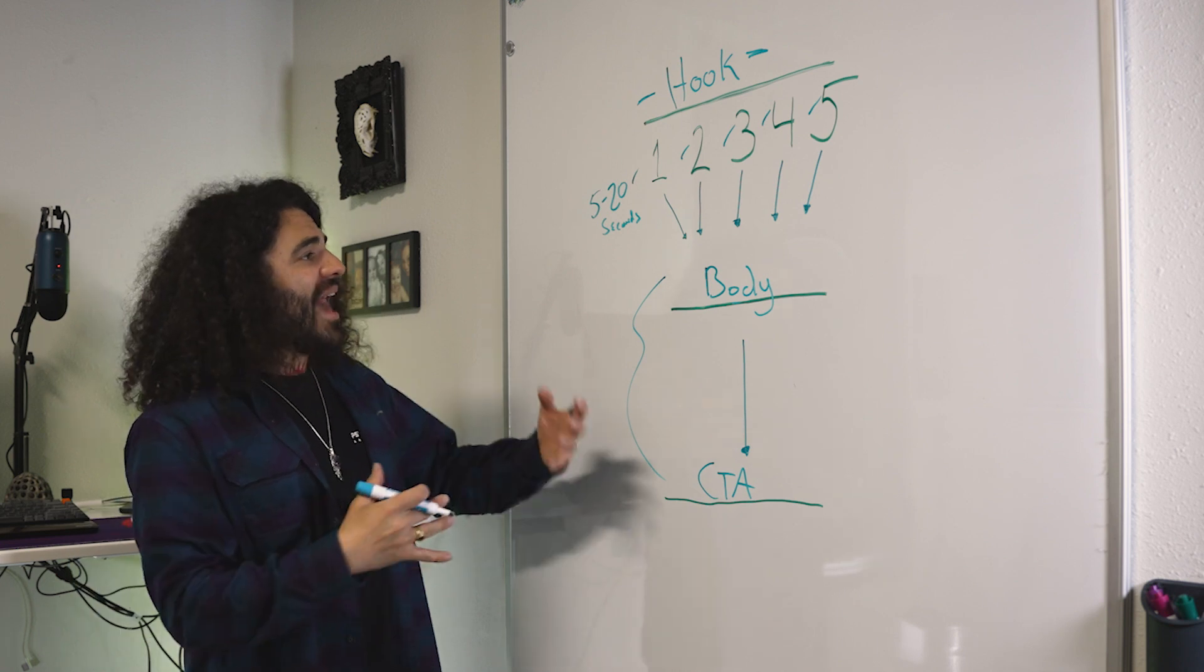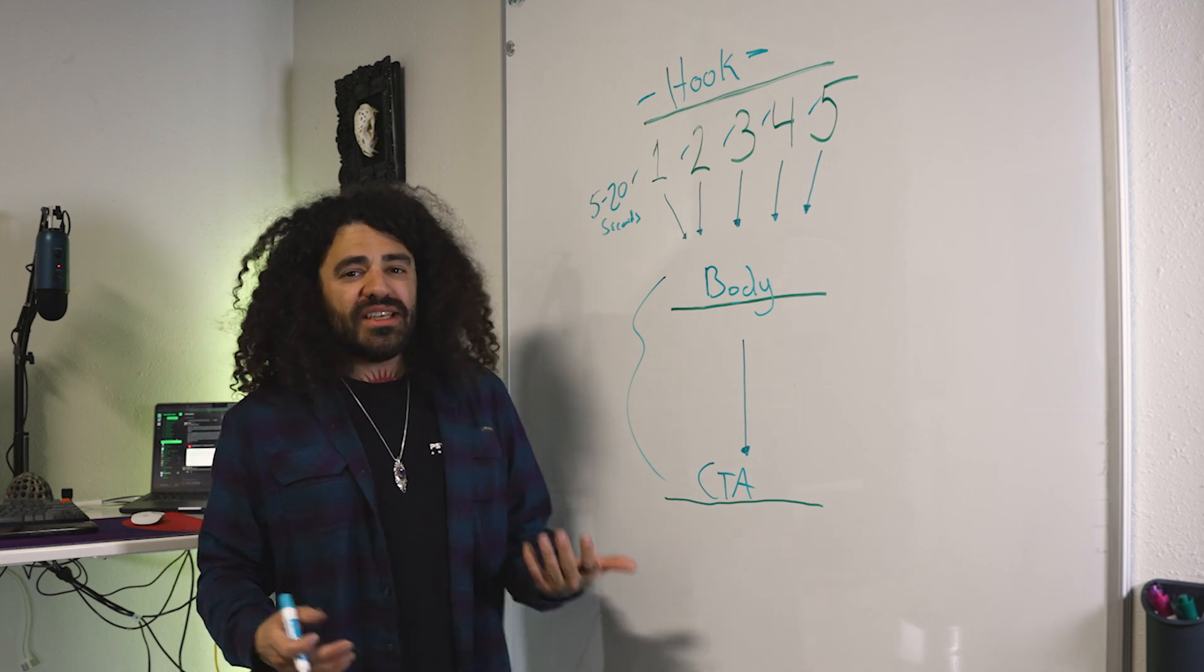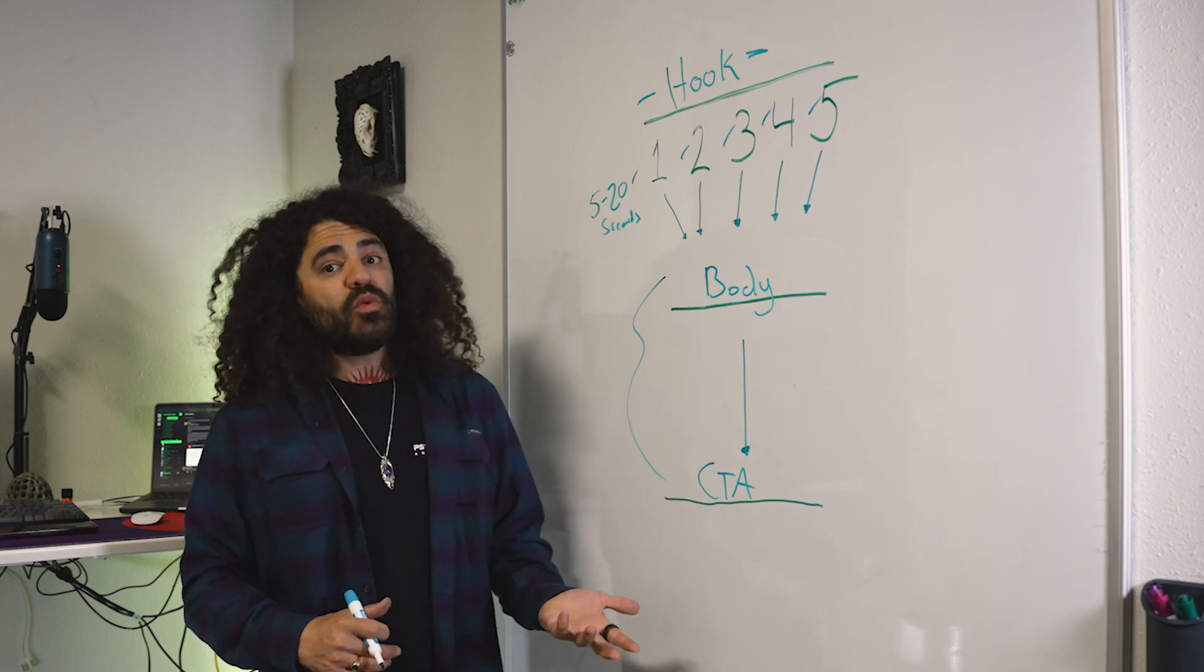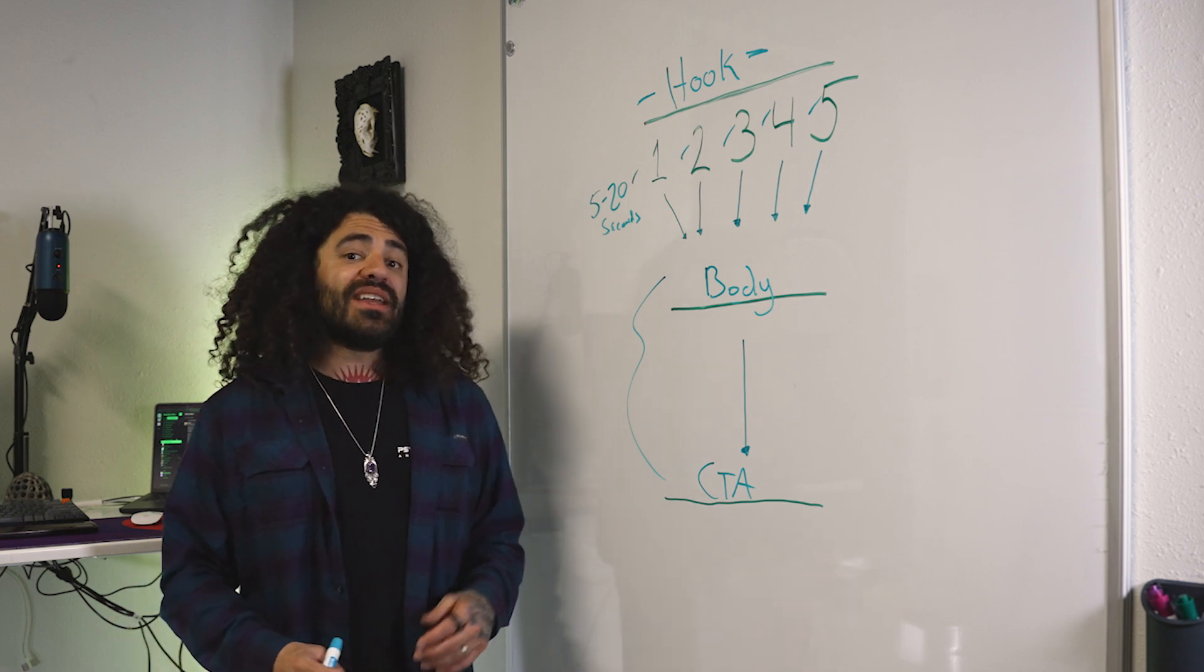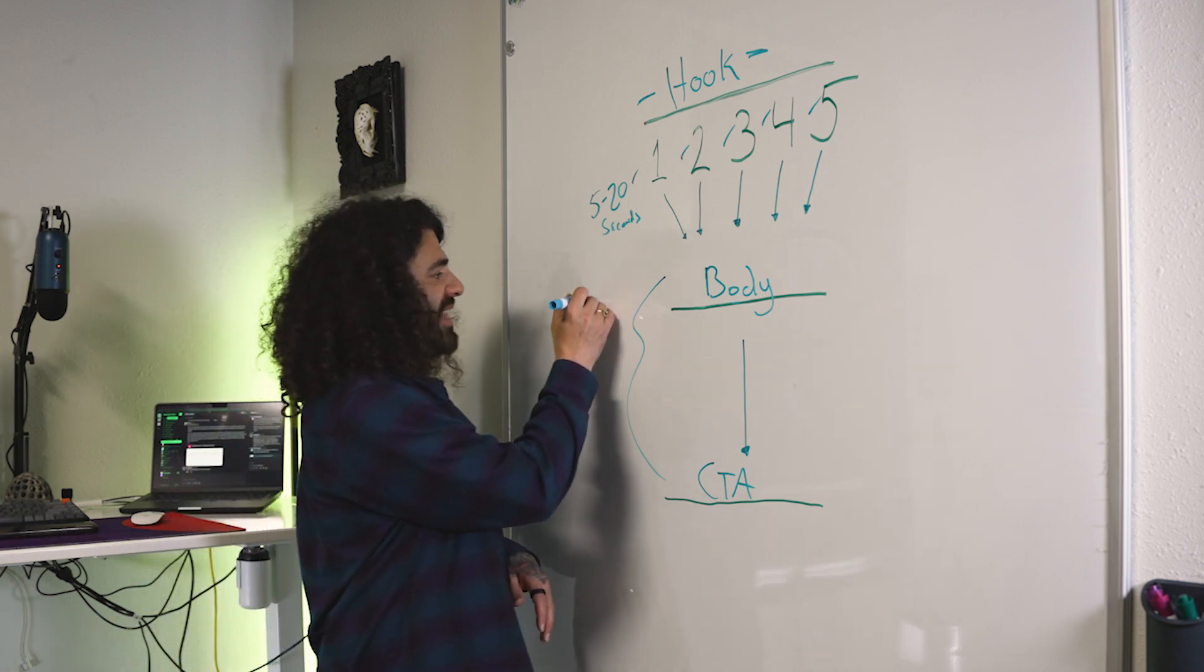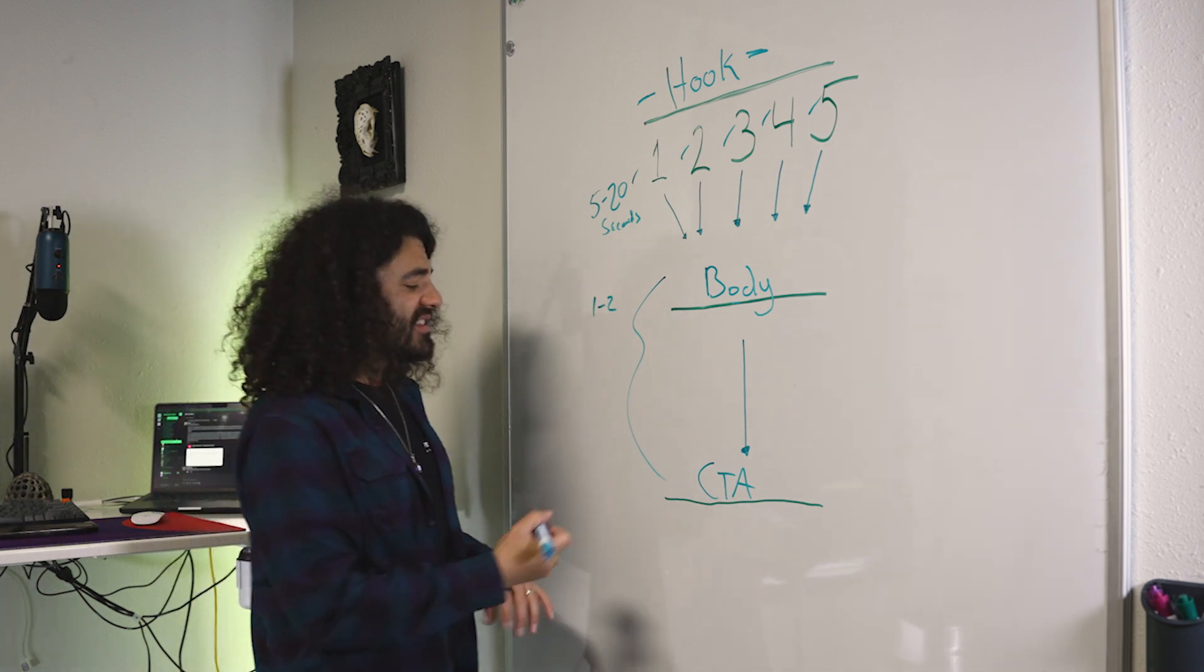I like to make my hooks somewhere between five and 20 seconds. If you can do that, really capture somebody's attention, transition that into the body. Typically, a video ad should be somewhere between a minute and I'd say max three minutes if you're doing an in-stream ad. The body would be somewhere between one to two minutes, which is usually what we find the sweet spot is.